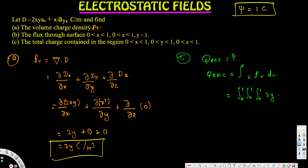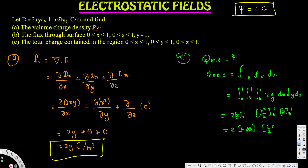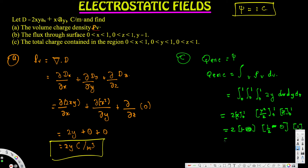So we have ∫₀¹∫₀¹∫₀¹ 2y dx dy dz. Integrating: the x integral gives [2x] from 0 to 1 = 2, the y integral gives [y²/2] from 0 to 1 = 1/2, and the z integral gives [z] from 0 to 1 = 1. Multiplying: 2 × 1/2 × 1 = 1. Therefore Q_enclosed = 1 C. This is the final answer.